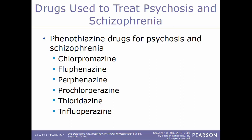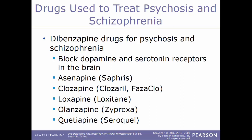Examples of phenothiazine drugs include chlorpromazine, fluphenazine, perphenazine, chlorpromazine, thioridazine, and trifluoperazine. Another category used to treat psychosis and schizophrenia are the dibenzapine drugs, which act by blocking dopamine and serotonin receptors. Examples include asenapine (Saphris), clozapine (Clozaril/Fazaclo), loxapine (Loxitane), olanzapine (Zyprexa), and quetiapine (Seroquel).